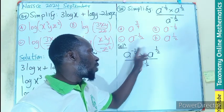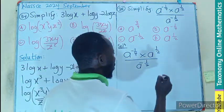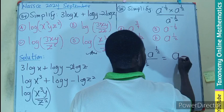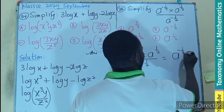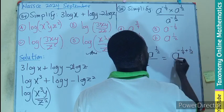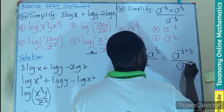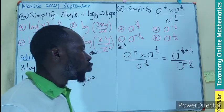Remember, the multiplication is to add the exponent. So this will mean that I'll be having A exponent negative 1 on 4 plus 1 on 2 divided by A exponent negative 1 on 2.